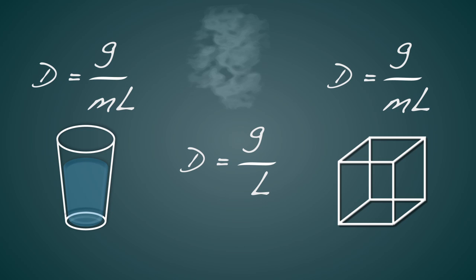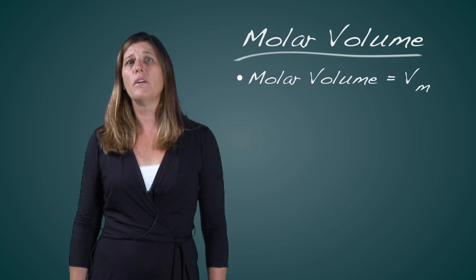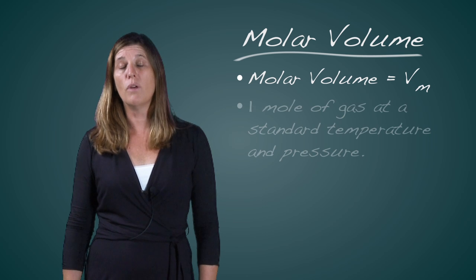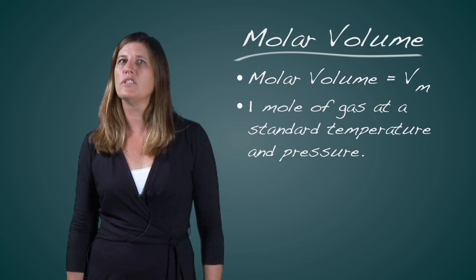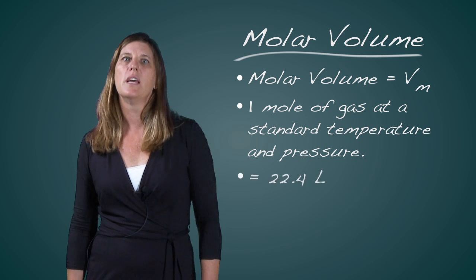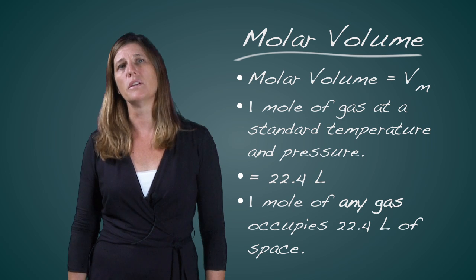Now, I want you to wrap your brain around this. We've been talking about the ideal gas law and molar volume. Remember molar volume? Molar volume is the volume of one mole of a gas at standard temperature and pressure. It's defined as 22.4 liters. So one mole of any gas occupies 22.4 liters of space.